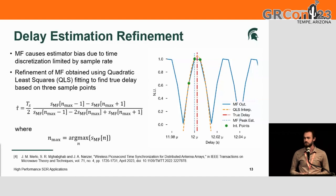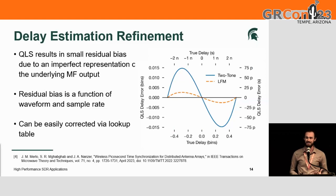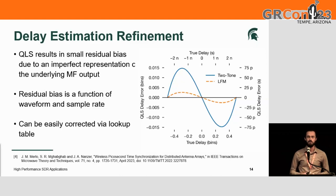You can also perform interpolation by zero-padding in the frequency domain during the matched filter step to improve things further. Finally, because the parabola is not a perfect fit for the matched filter output, there is still some residual bias remaining, which is a function of the waveform parameters and sampling rate. We correct for this using a lookup table computed ahead of time since we know the sampling rate and waveform parameters in advance.